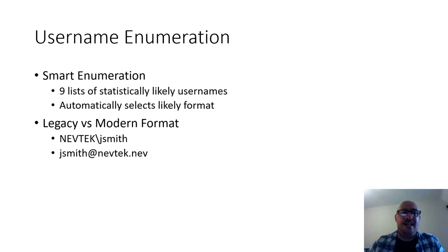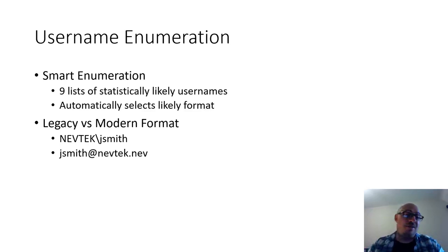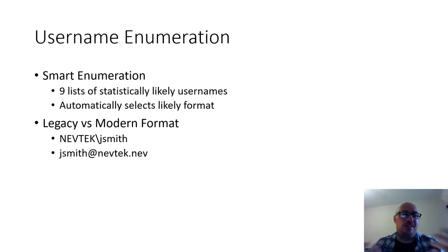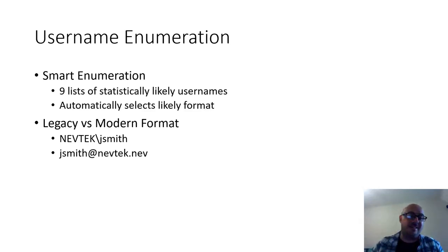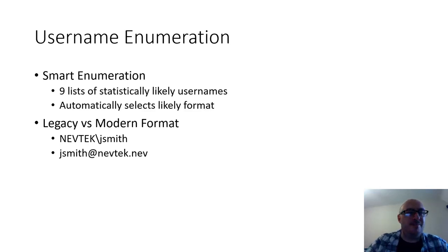If you choose to use the discovered username format for password spraying, invalid usernames will still take ages. Username enumeration means every invalid user takes 30 to 40 seconds — that could take a couple of days. Ideally use username enumeration to get the likely format (maybe five minutes), then pause, switch to password spray, and pick the same format to spray. If you don't get results it's possible the formats don't match and you'll need to try different potential formats manually. Password spraying only finds results if you get both username and password correct, but it takes 10 minutes instead of two days.